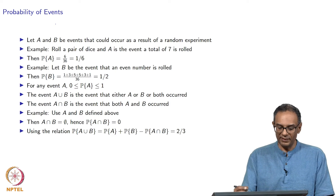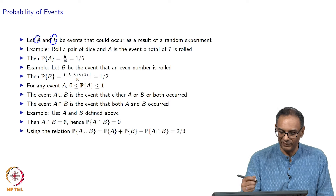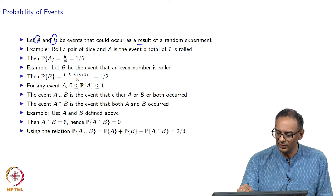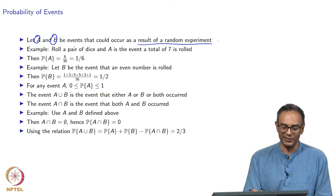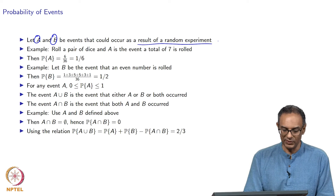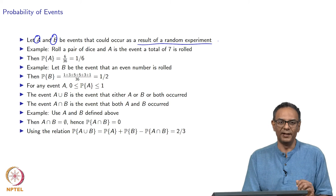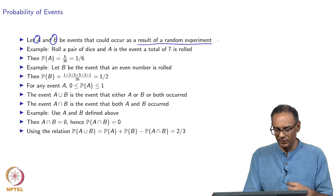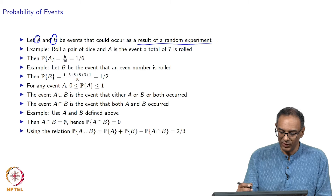Say there are two events A and B. A and B are two events and these could occur as a result of a random experiment. Let me give you an example — it is easiest to explain this using an example. The example is somewhat elementary and my approach is to start with something elementary and then take things up a notch as we go ahead.